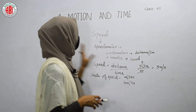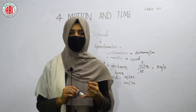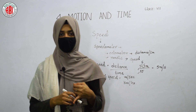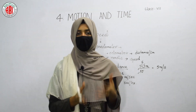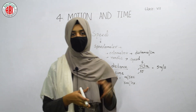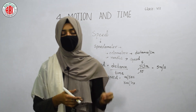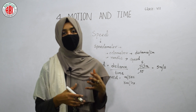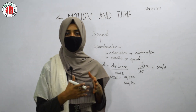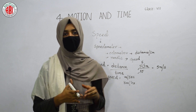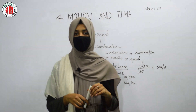In the lesson motion and time, we have discussed the different types of motion: translatory, rotatory, and oscillatory motion. Different objects show different motions depending upon the path of motion. We also studied time — the duration in which events happen — and speed, which is the measurement of an object's distance per unit time. These are the things studied in the lesson motion and time, and here the lesson ends. Meet you in the next class. Thank you.